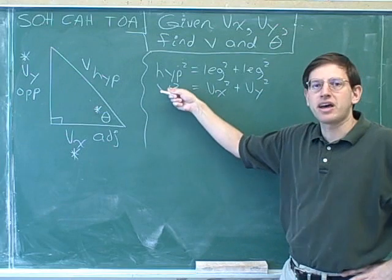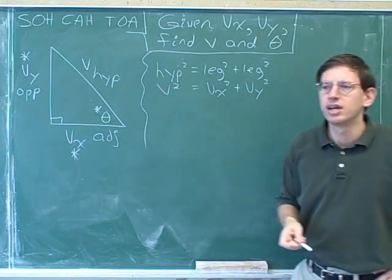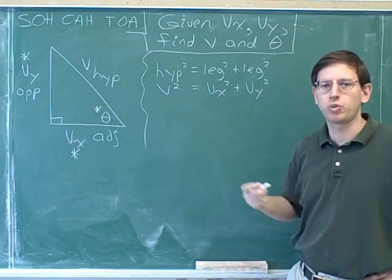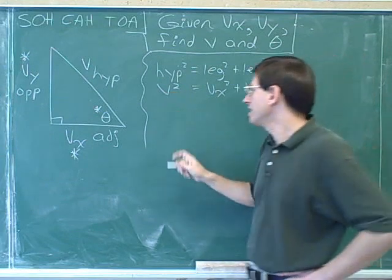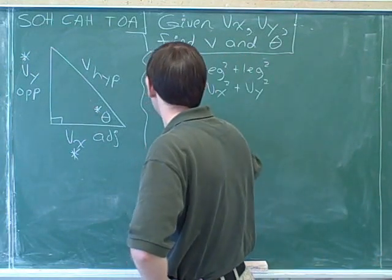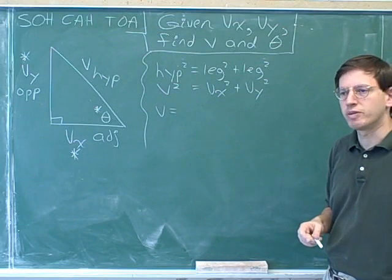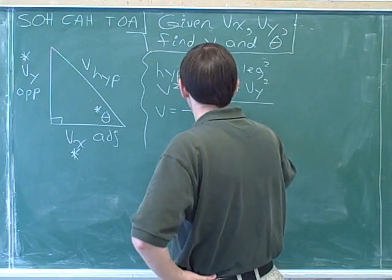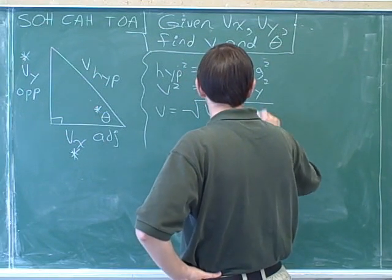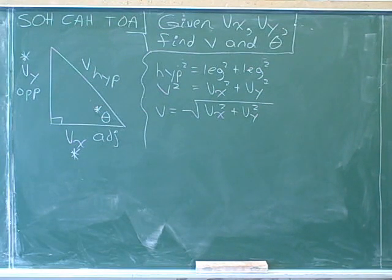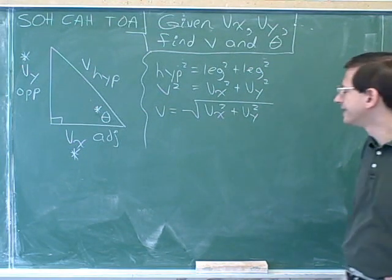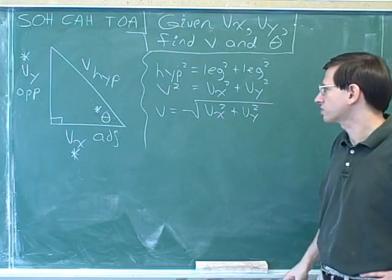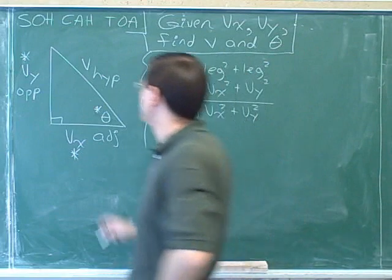V is almost by itself — the only thing left is to get rid of the squaring term. The opposite of squaring is square rooting. If we take the square root of the left-hand side, all that's left is v. The golden rule of algebra says we must also take the square root of the right-hand side. So v equals the square root of v sub x squared plus v sub y squared.